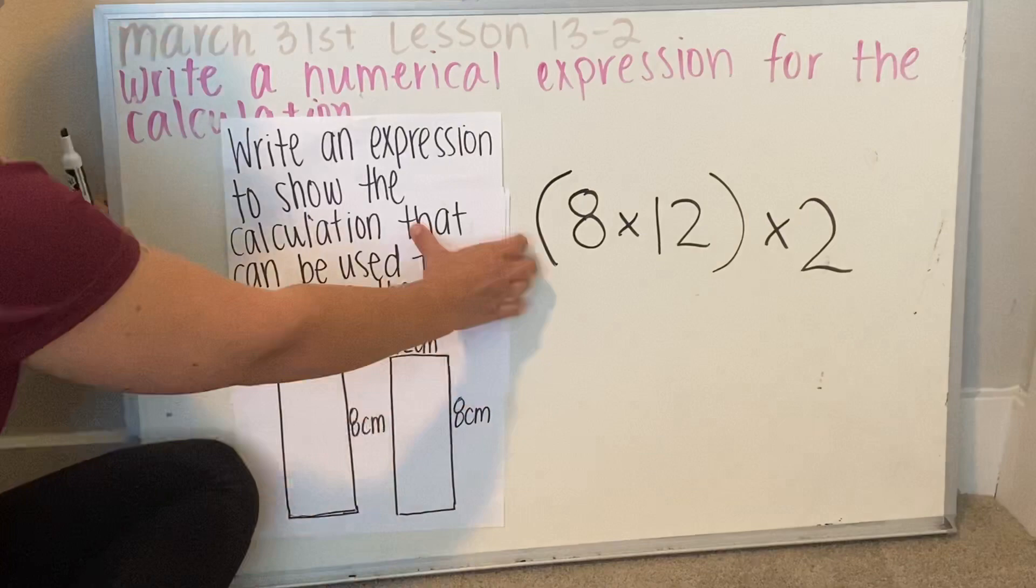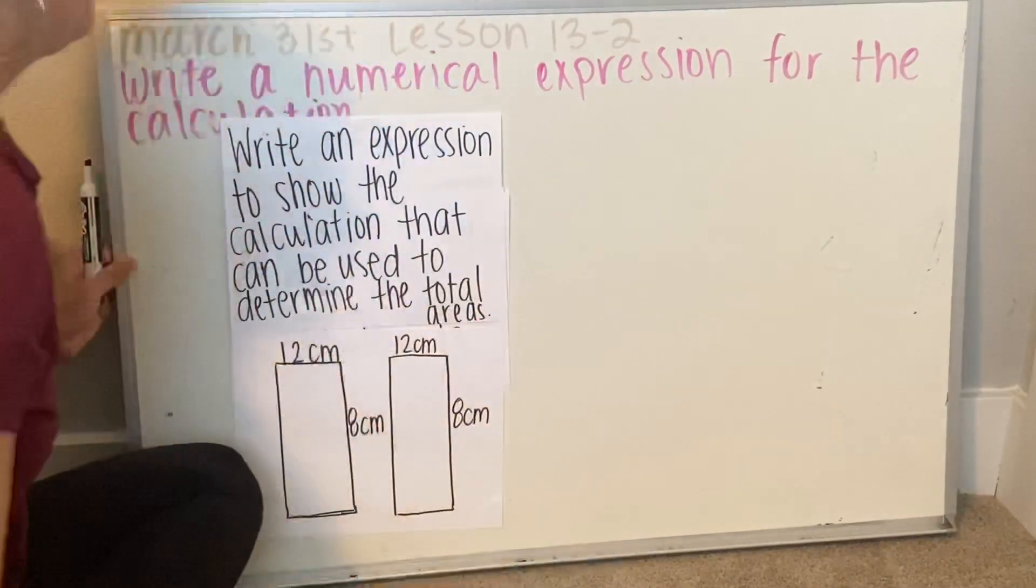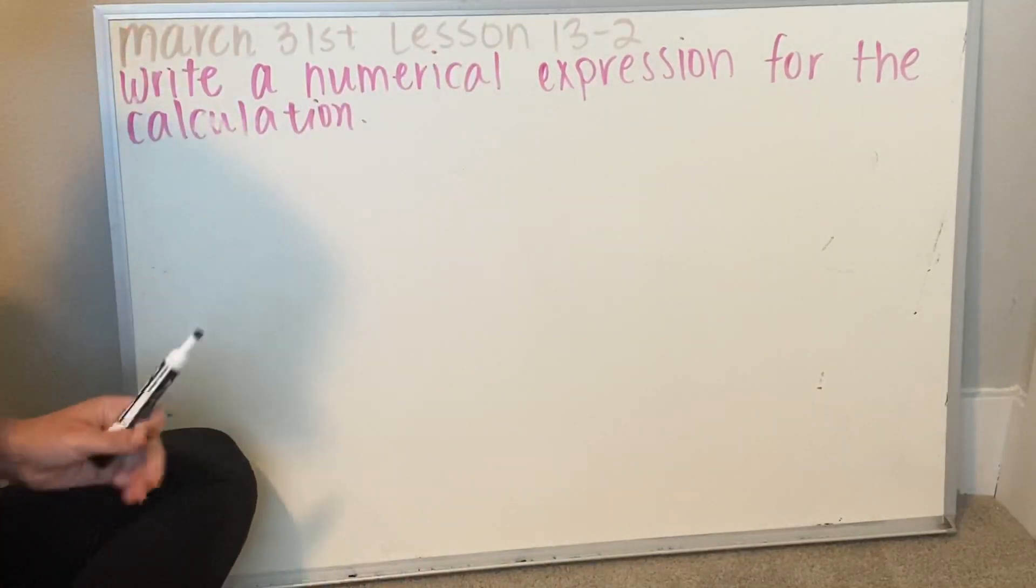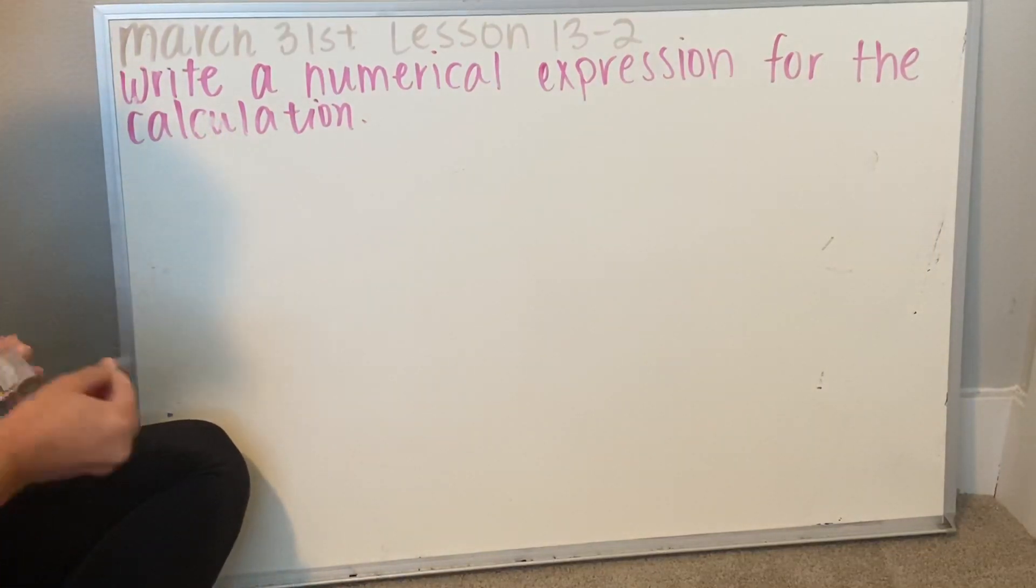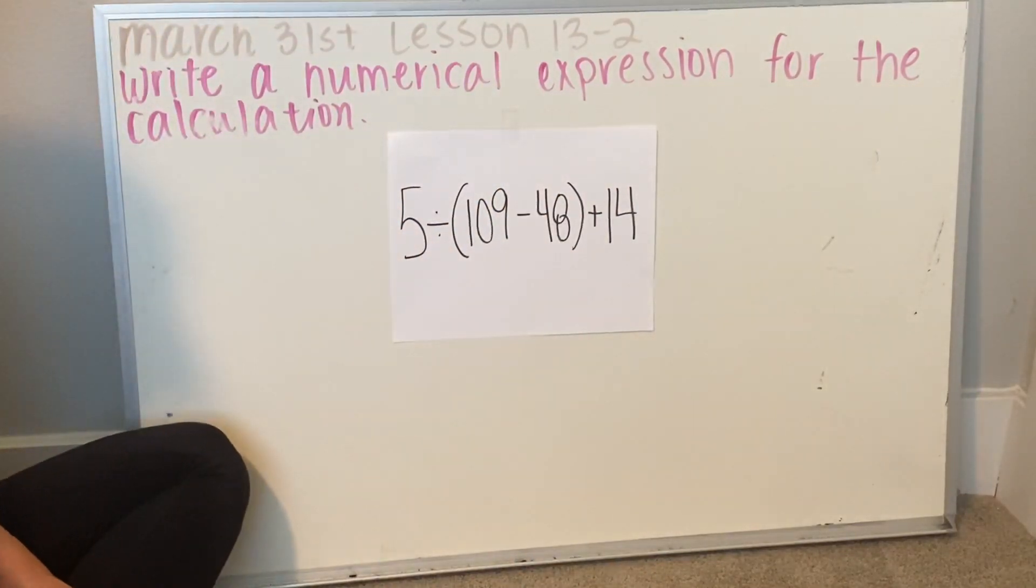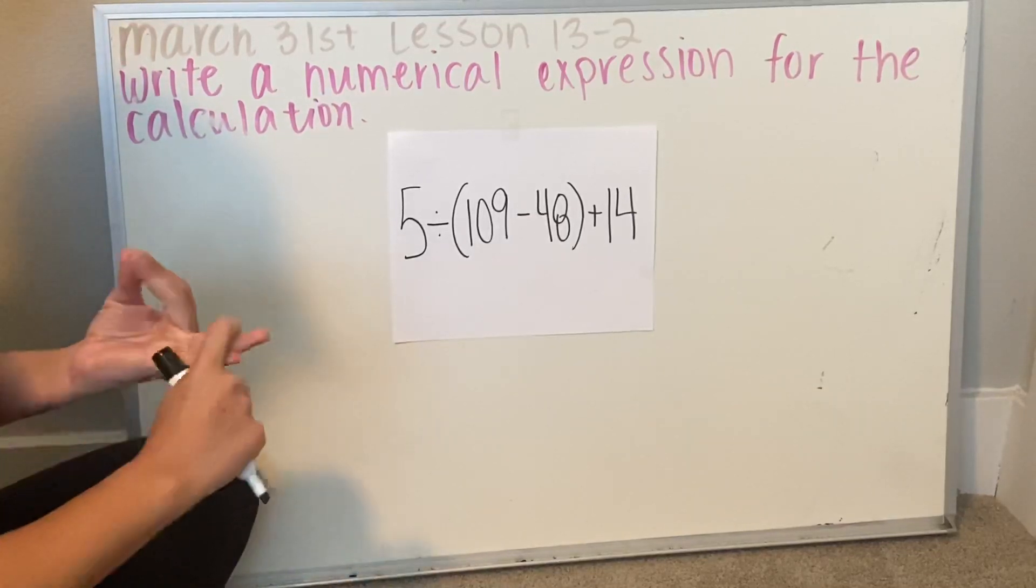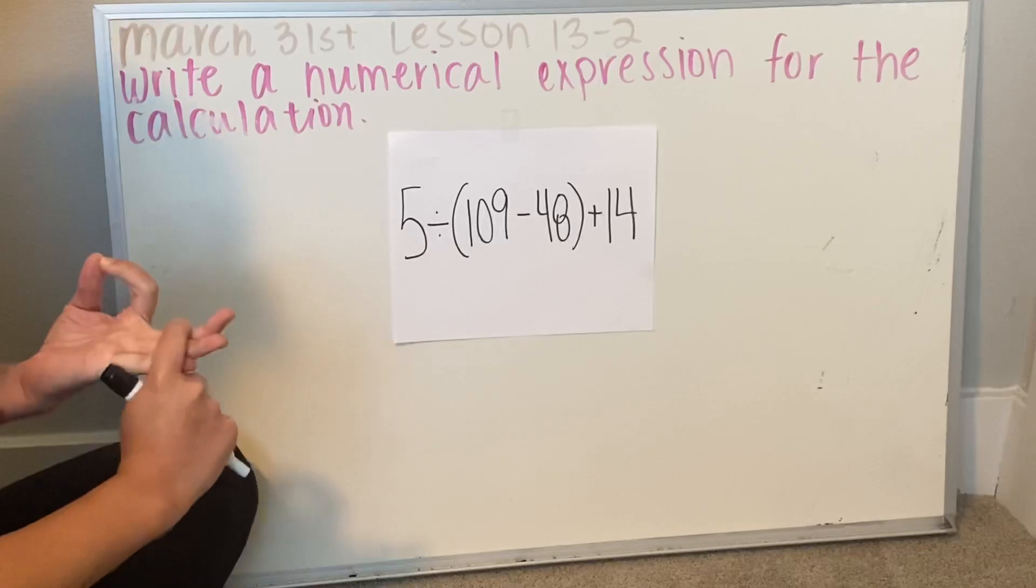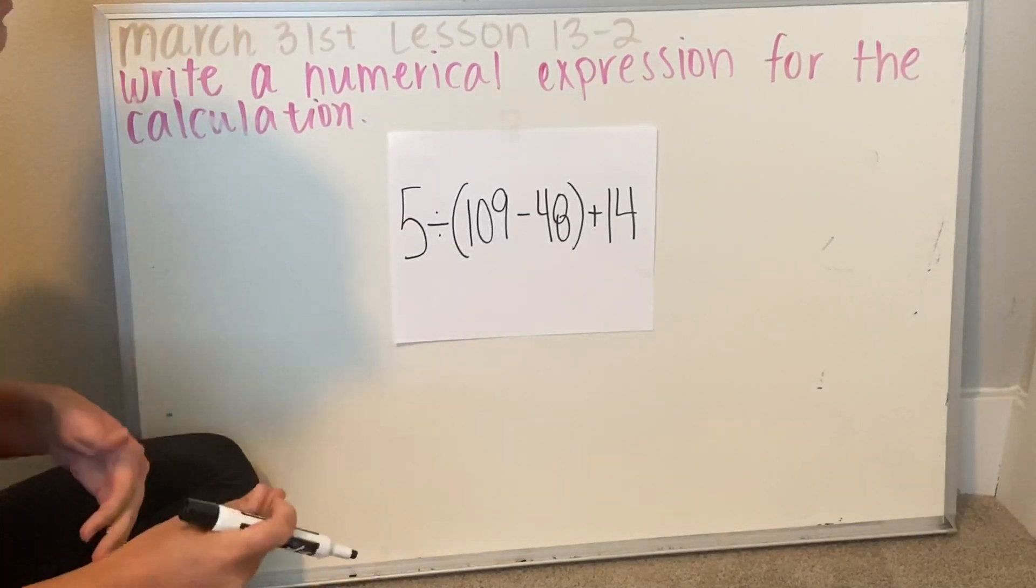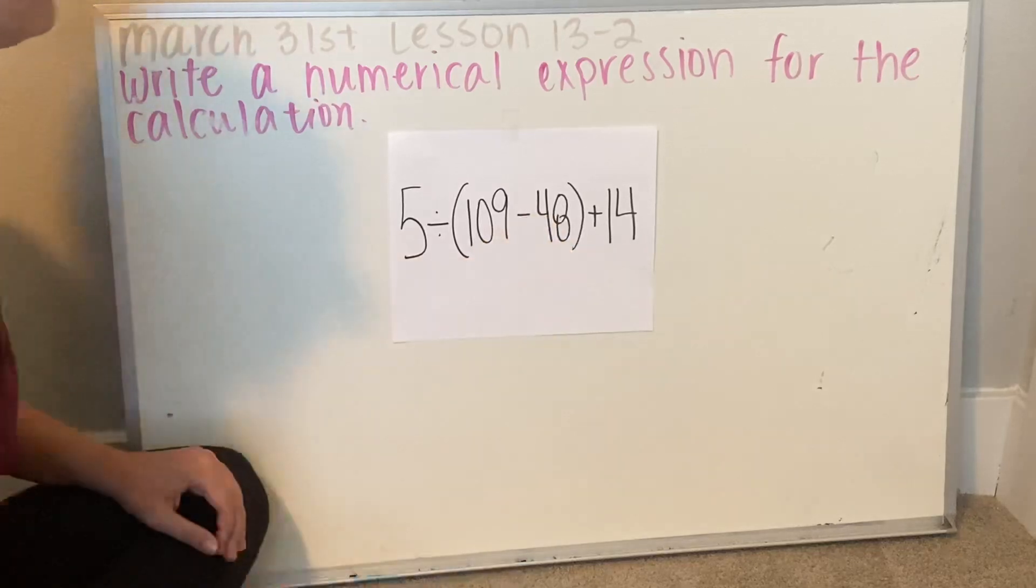You might also get a problem that looks like this. And it'll say, what do I do first? What are you supposed to do first? Are you supposed to divide first? Are you supposed to subtract first? Or are you supposed to add first? And since you all know the order of operations, you should know that the first step in doing this is going to be subtracting 109 take away 48. That's the first step.